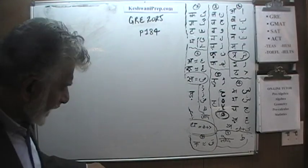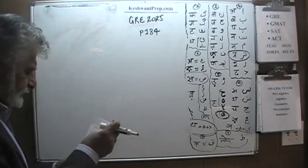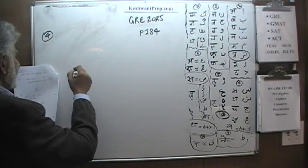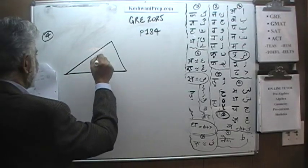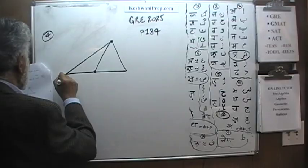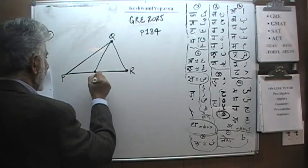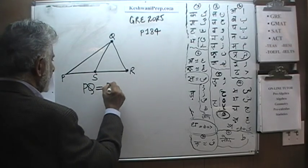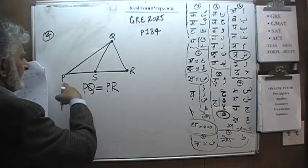Next problem is a geometry problem. I have to draw a picture as best as I can. Problem number 4. The picture that is given to us looks something like this: P, Q, R and S. And we are further told that PQ is equal to PR. In other words, this side P to Q is same as P to R.